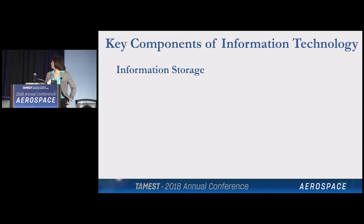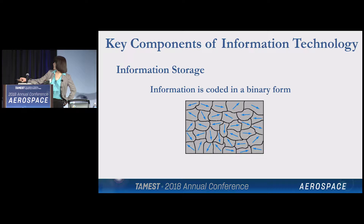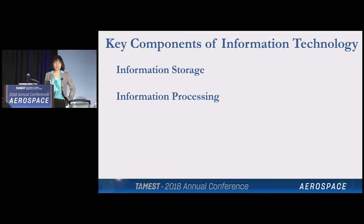Let's first review what are the key components of information technology. First, you need to store information. We know information is stored in binary form. In today's technology they're stored in magnetic films where the orientations of these little domains represent information. If they point in one direction, let's say to the right, they represent one. If they point to the left, they represent zero.